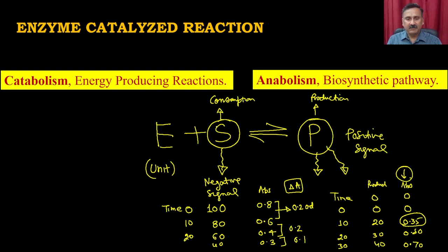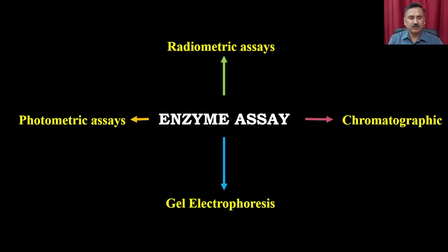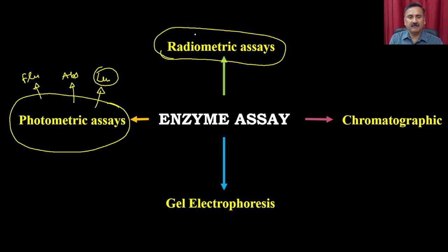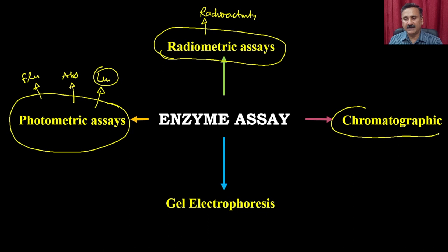Depending on the different properties of the substrate or the product, enzyme assays can be done using different types of techniques. You can use photometric assays, where you can see changes in fluorescence and luminescence. You can also use radiometric assays, where you see a change in radioactivity of the substrate or the product. Chromatographic techniques can also be used for measuring enzyme assays.